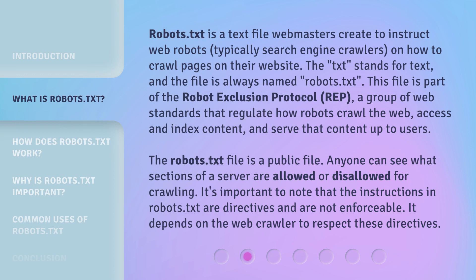robots.txt is a text file webmasters create to instruct web robots — typically search engine crawlers — on how to crawl pages on their website. The .txt stands for text, and the file is always named robots.txt. This file is part of the Robot Exclusion Protocol (REP), a group of web standards that regulate how robots crawl the web, access and index content, and serve that content up to users.